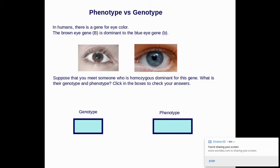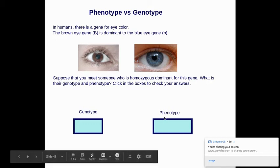Suppose that you met someone who is homozygous dominant for this gene. Homozygous means same. Dominant means capital letter. What is their genotype and what is their phenotype? So homozygous same, same two letters. Dominant means capital.